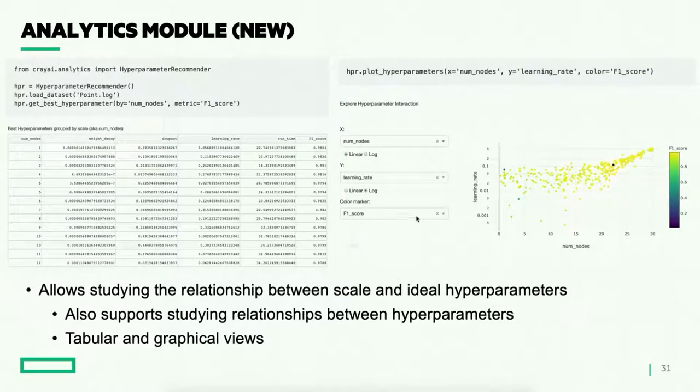Another thing we've been working on recently is the addition to the HPE CrayAI of an analytics module, which allows you to better study and examine the results of your hyperparameter optimization. So you can study the relationship here between either scale and a specific hyperparameter. So we see here, we're examining the relationship between the number of nodes we trained on and the learning rate, with the color there indicating the fitness metric. This could also be changed to examine the relationship between two different hyperparameters. So if you think there might be some interesting relationship between two of your different hyperparameters, you can examine that as well. And we see that we provide both graphical and tabular views.